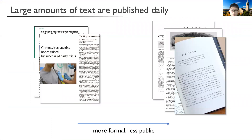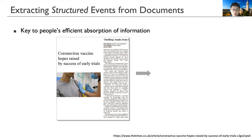A lot of articles are published every day, and they are from different sources and domains. On the left are some recent news articles, and on the right are some legal documents and chapters from books. From the news articles to the more proprietary documents, writing becomes more formal and the documents are less public. Extracting structured information of events from unstructured text is key to efficient reading as well as knowledge acquisition.